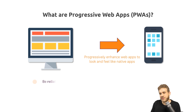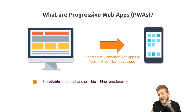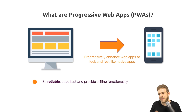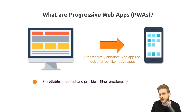It's reliable because it loads fast and it provides offline functionality. So with one of the features that's part of progressive web apps — service workers — you can cache files to serve them even if the user is offline.